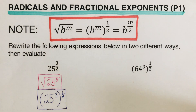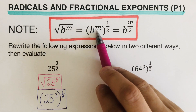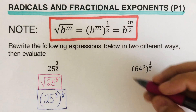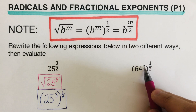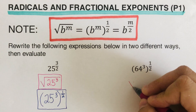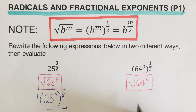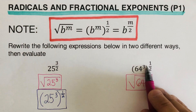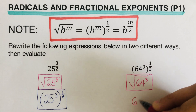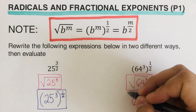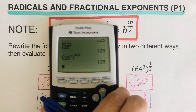In this next problem, the given expression matches our form. I'll come up with two more equivalent forms. The first is the square root of 64 to the power three — since m is three. The second expression is 64 to the power three-halves.